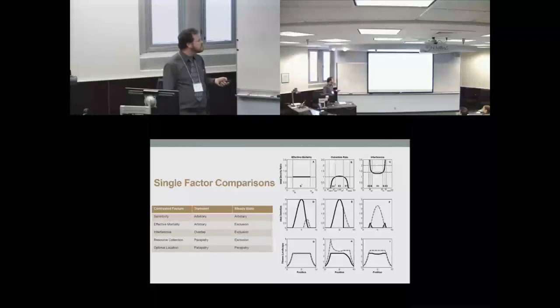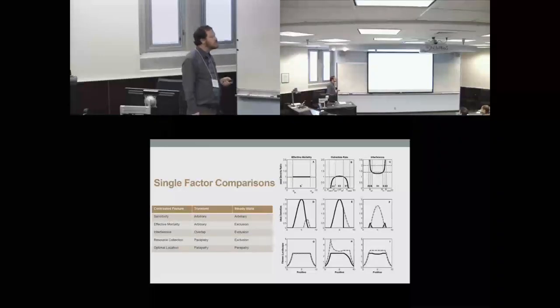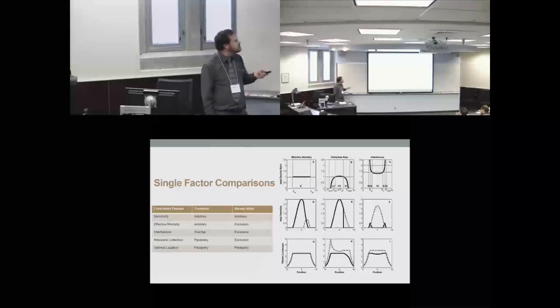Clinal variation is typically characterized by parapatry in both the transient period and the longer steady-state distributions.